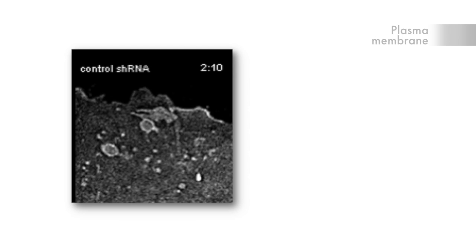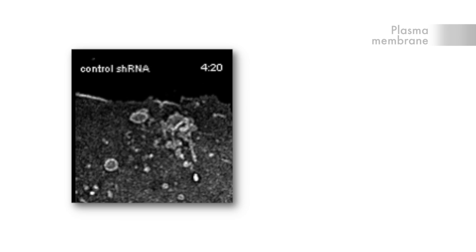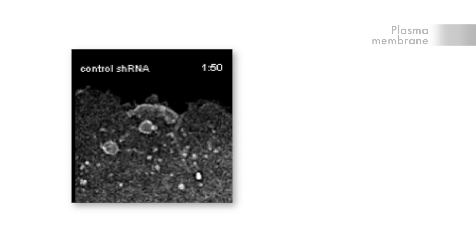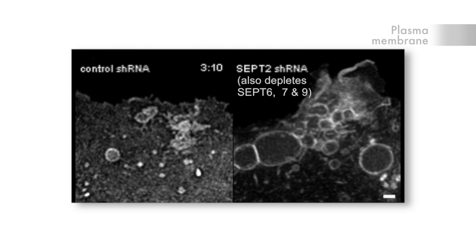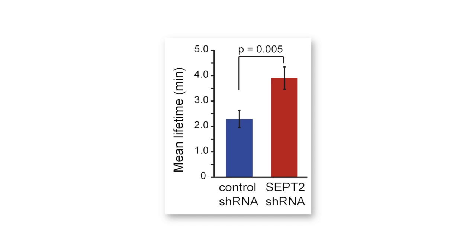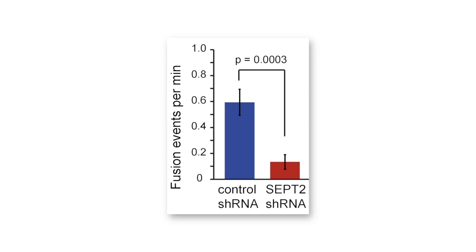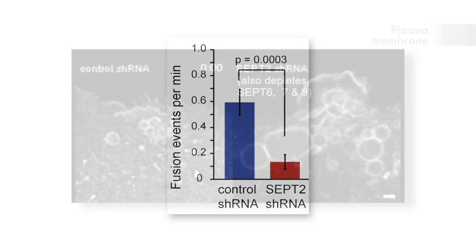Under steady-state conditions in control cells, nascent macropinosomes form, transiently accumulate, undergo fusion events, and are consolidated into single vacuoles. But when we knocked down septins—in particular septin-2—we saw that those fusion events were diminished. We observed the accumulation of clusters of macropinosomes that persisted much longer, suggesting a defect in their turnover. Individual macropinosomes also exhibited far fewer fusion events with one another, and often appeared docked, lacking the ability to undergo complete fusion.